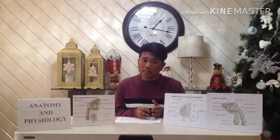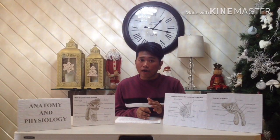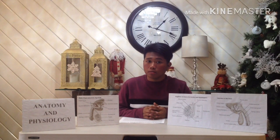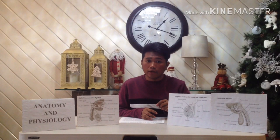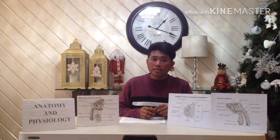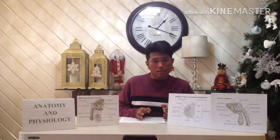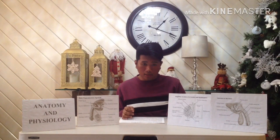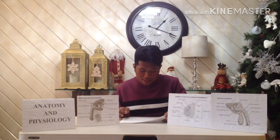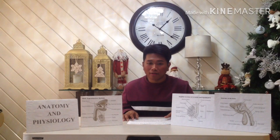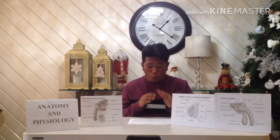The scrotum consists of skin and subcutaneous tissue. A vertical septum, or partition of subcutaneous tissue, in the center divides it into two parts, each containing one testis. Smooth muscle fibers called the dartos muscle in the subcutaneous tissue contract to give the scrotum its wrinkled appearance. When these fibers are relaxed, the scrotum is smooth. Another muscle, the cremaster muscle, consists of skeletal muscle fibers and controls the position of the scrotum and testes. When it is cold or a man is sexually aroused, this muscle contracts to pull the testes closer to the body for warmth.